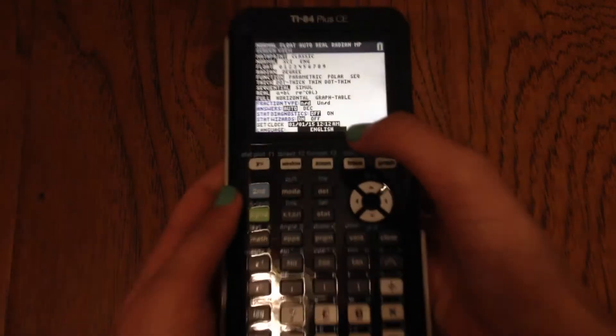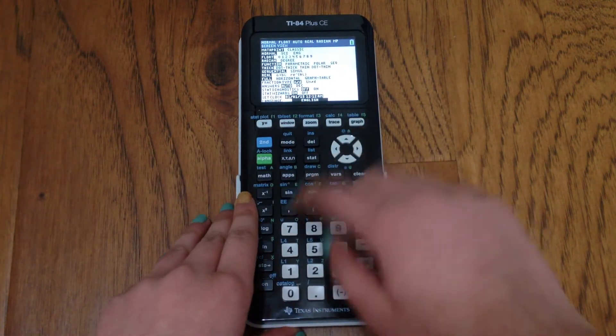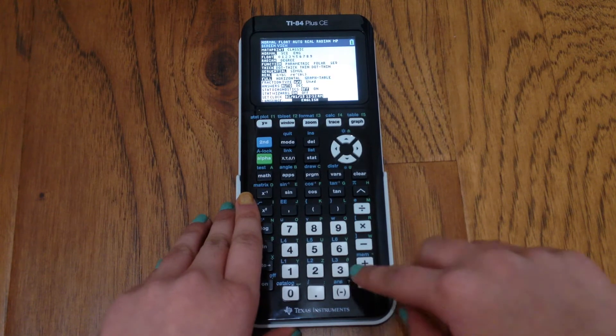horizontal, and graph table. In that row, you would scroll over and select graph table and hit enter.